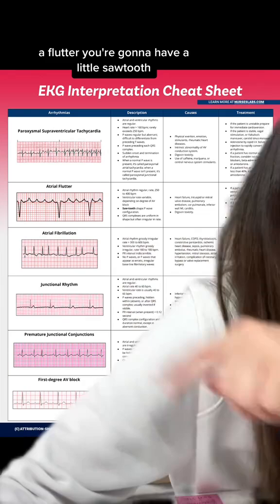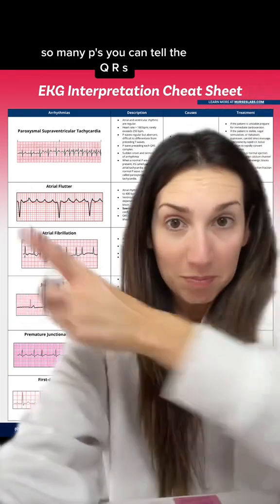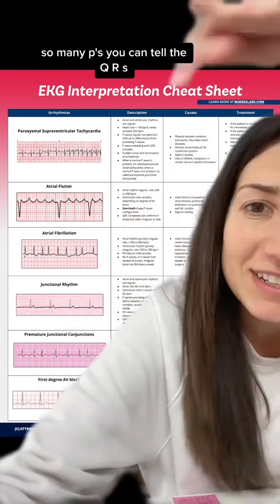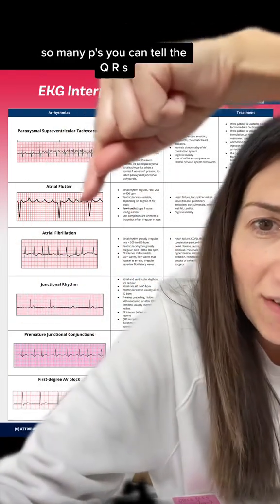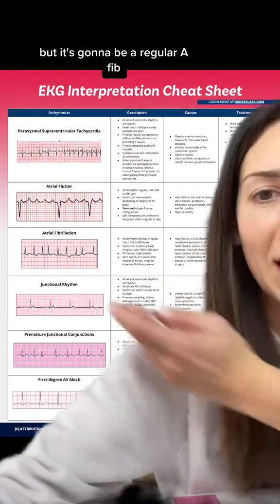A-flutter — you're going to have the little sawtooth pattern, so many P's. You can tell the QRS but it's going to be irregular.